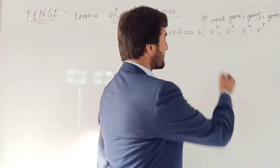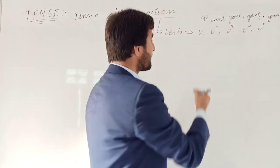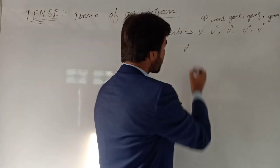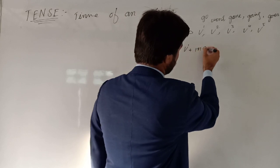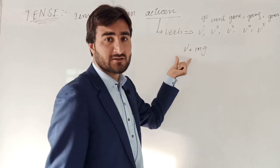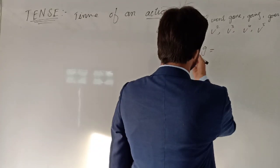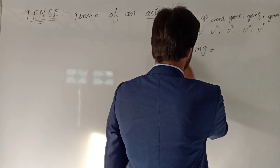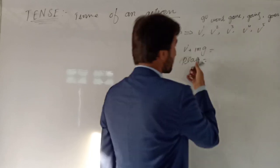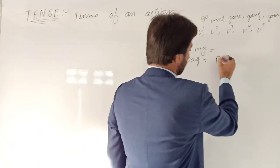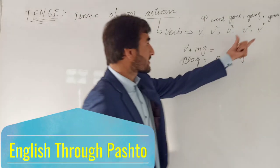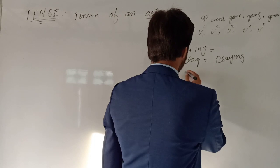In English, the first form of a verb means V1, the second form, the third form, the fourth form which means V4 or ING, and the fifth form. For example, the first form means 'play,' and the fourth form means 'playing.' The second form is 'played' and the third form is also related to 'played' or 'playing.'